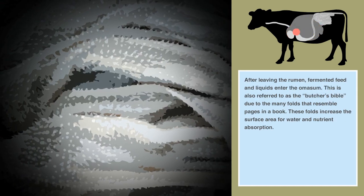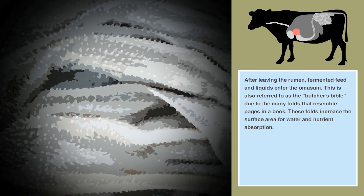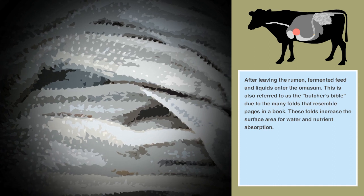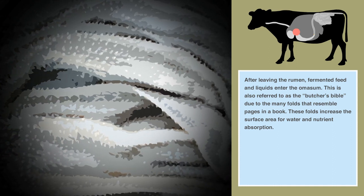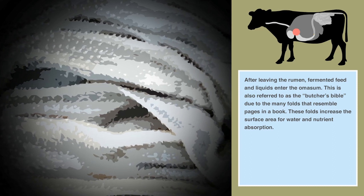After leaving the rumen, fermented feed and liquids enter the omasum. This is also referred to as the butcher's bible due to the many folds that resemble pages in a book. These folds increase the surface area for water and nutrient absorption.